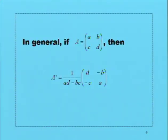In general, if matrix A is equal to (a, b, c, d), then the inverse of matrix A is written as 1 over the determinant AD minus BC, times (d, -b, -c, a).